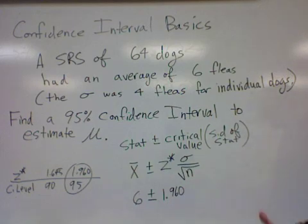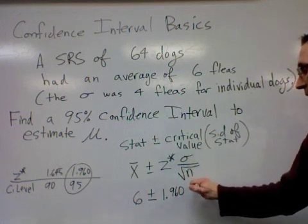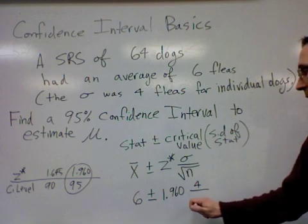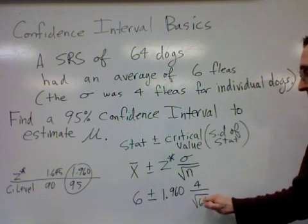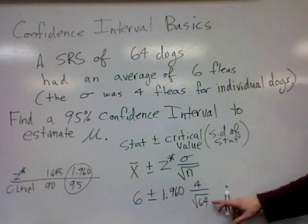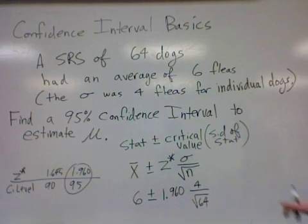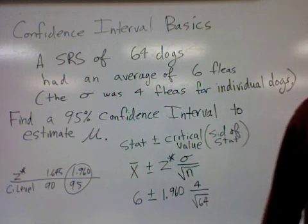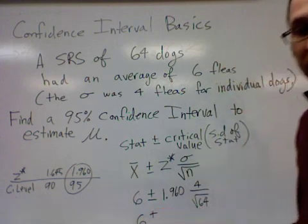More of an explanation of what this means at the very end. But this is just the mechanics of actually getting the numbers down. Standard deviation is 4 for individual dogs divided by the square root of how many dogs are in a sample, which is 64. So we get 4 divided by 8, which is a half.